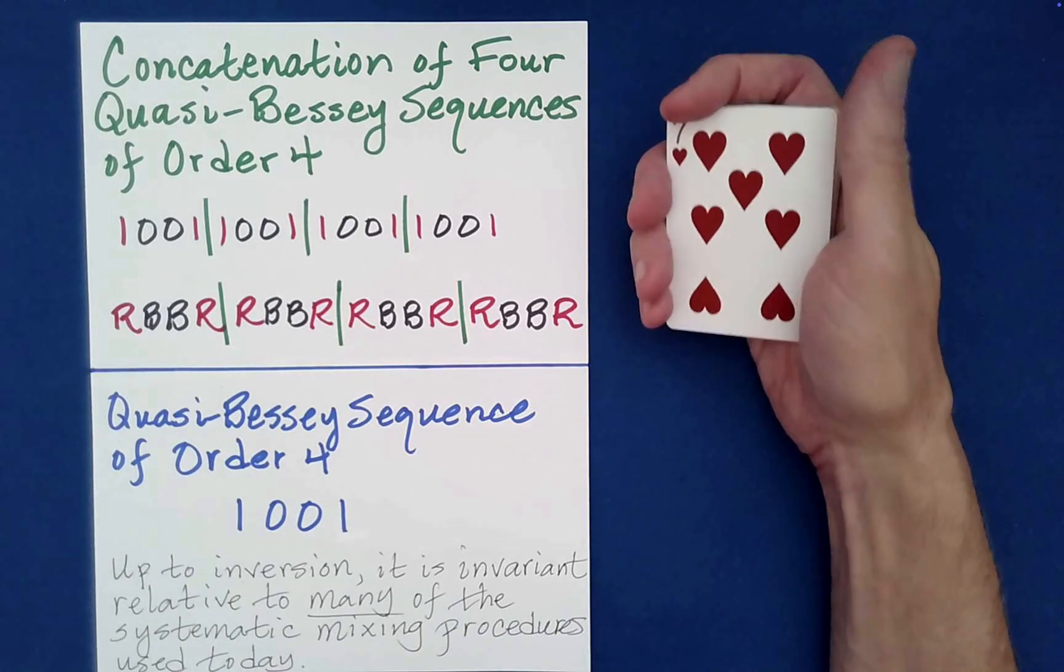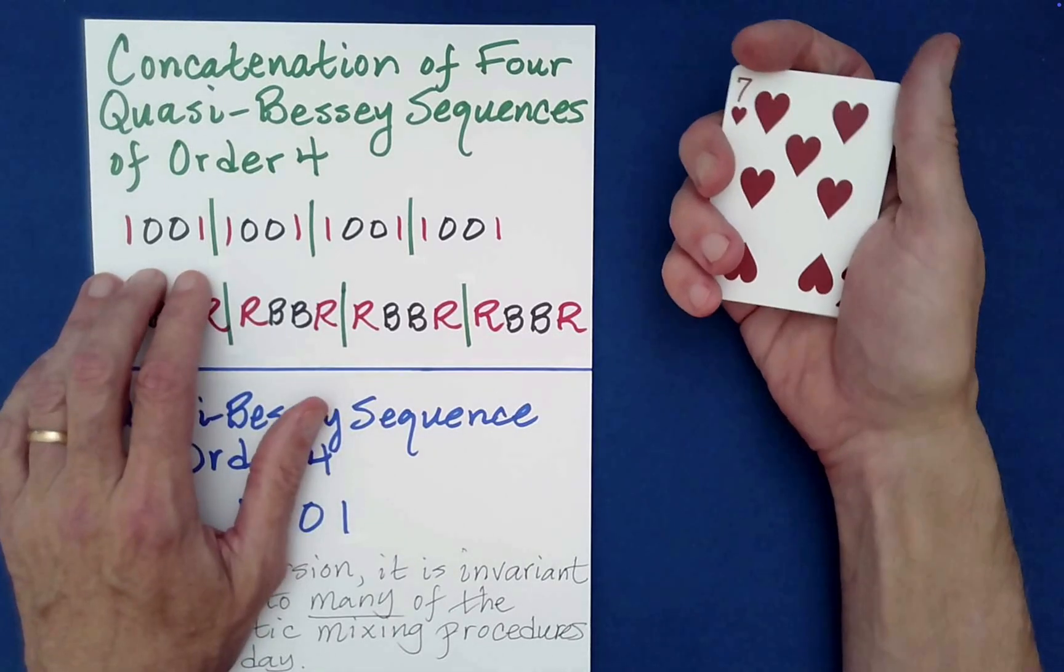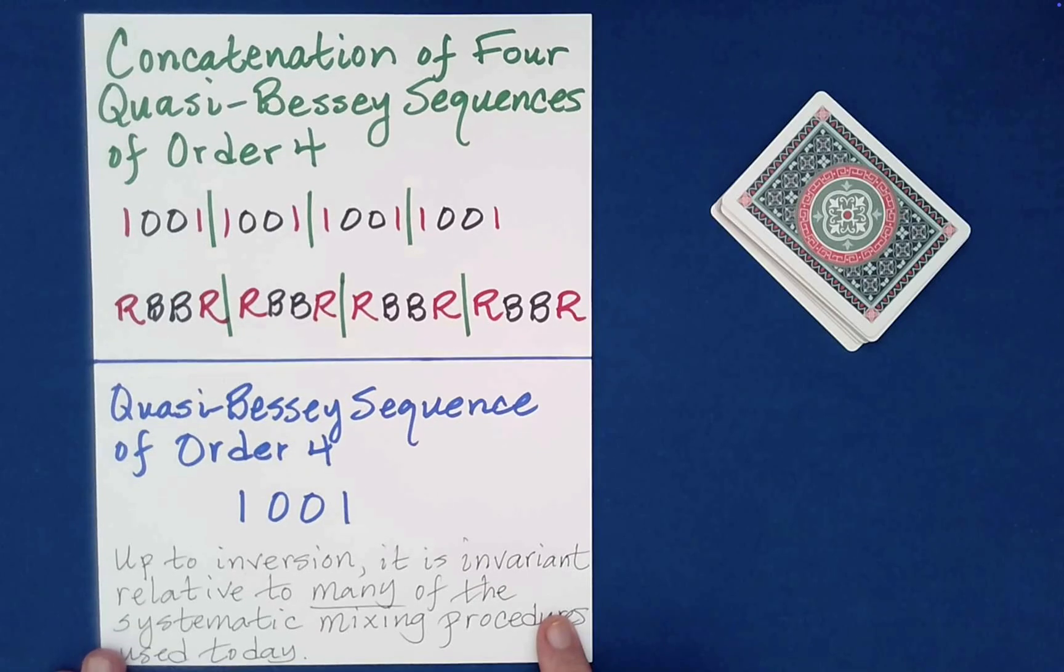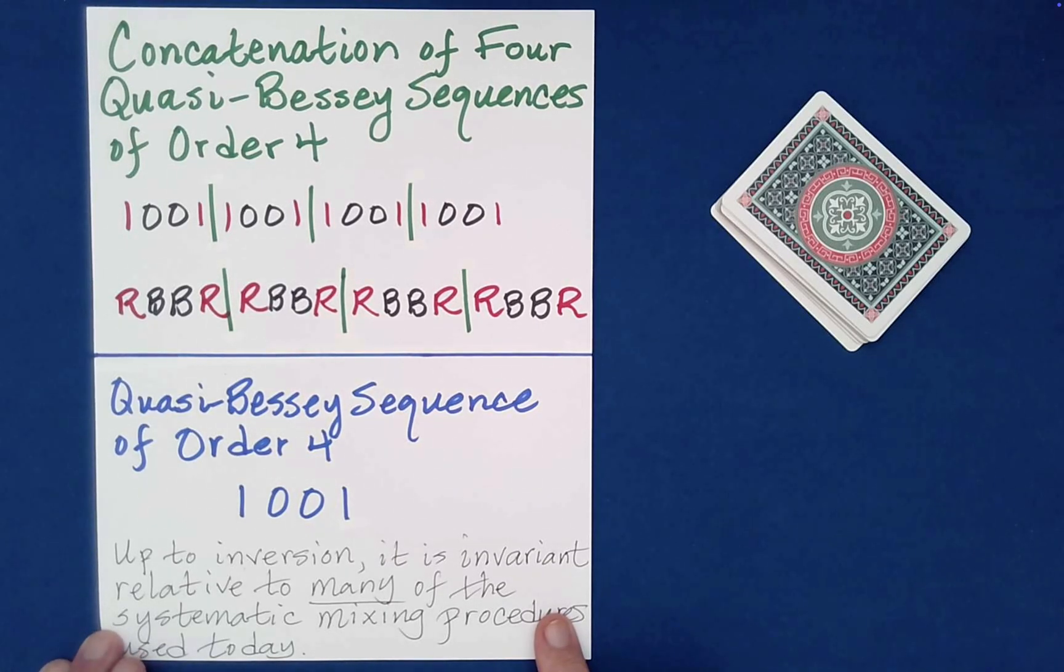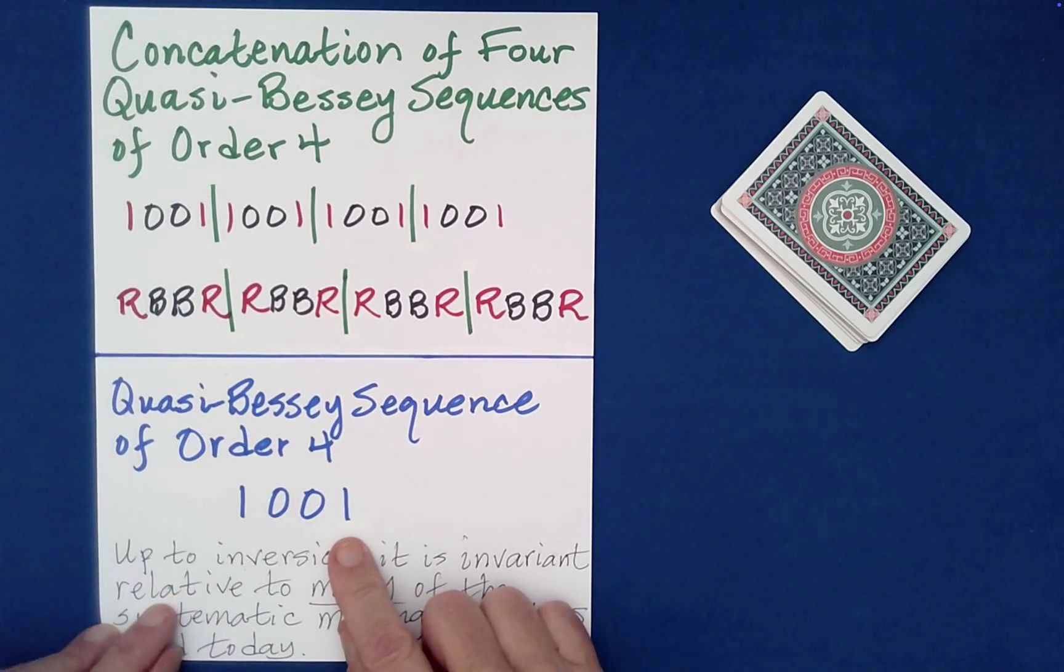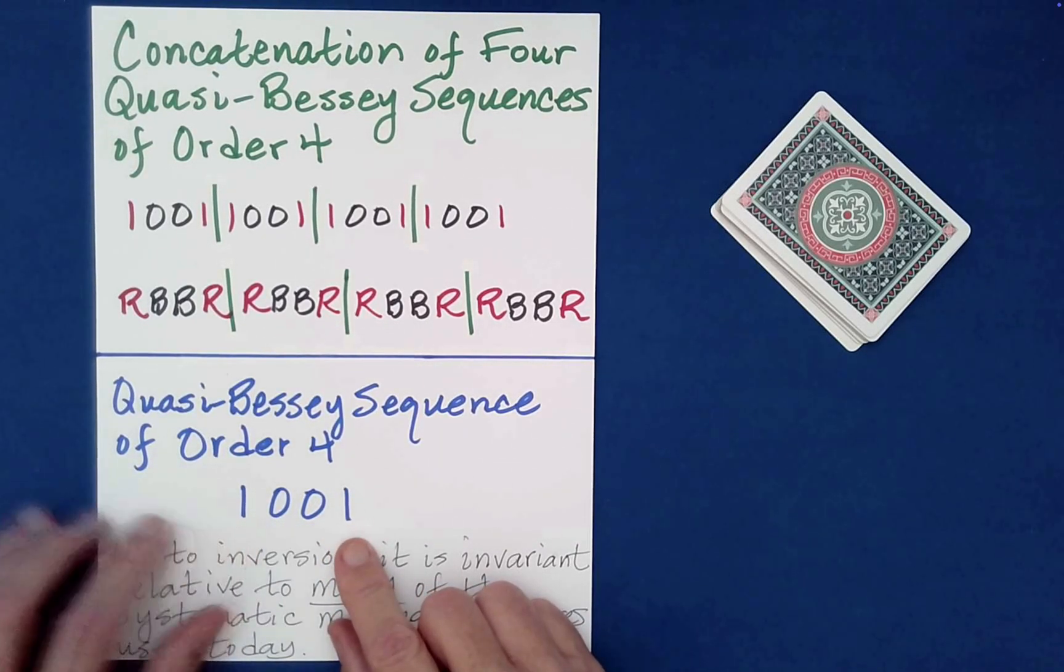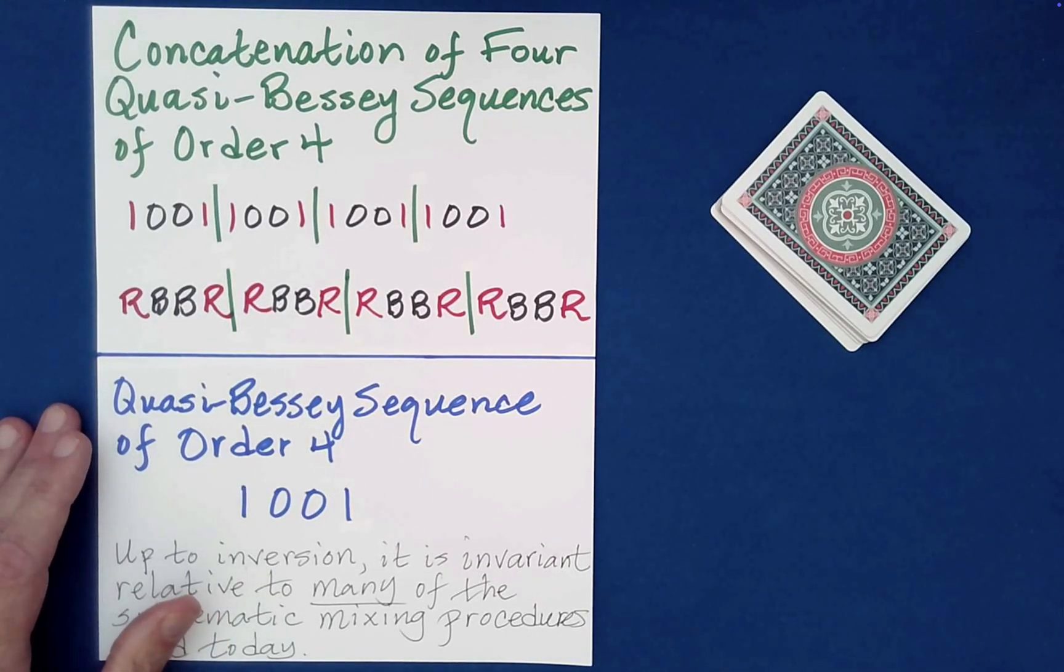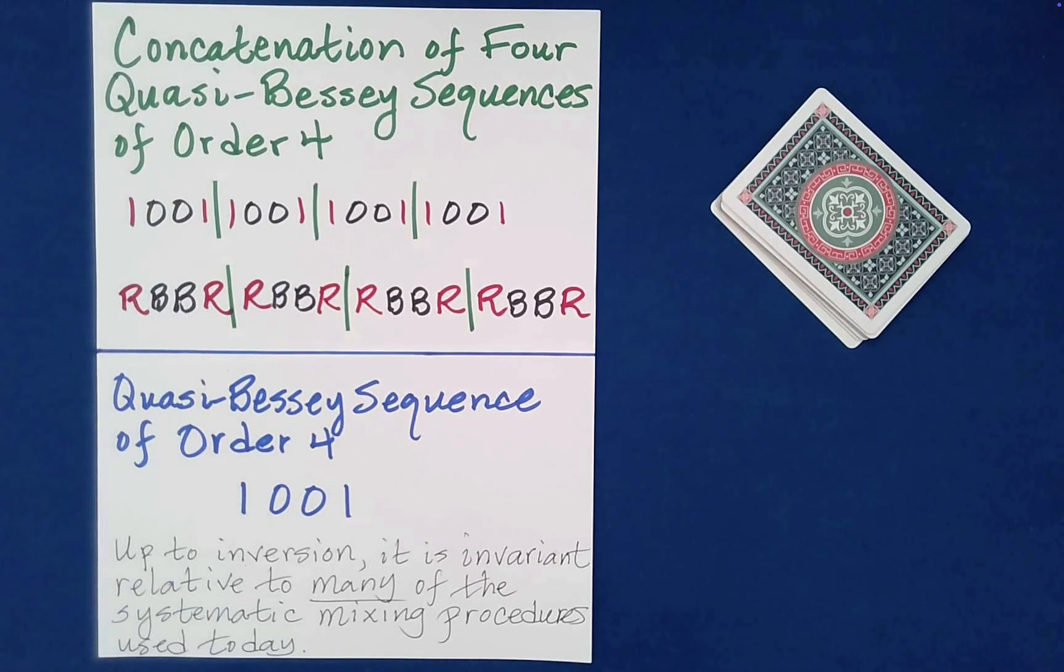With this structure, as you'll learn if you watch the videos in my series about Bessey sequences and quasi-Bessey sequences, this particular structure - this one, zero, zero, one - is invariant. We call it unharmed by many of the systematic mixing procedures used today. It will either be preserved precisely or it might be inverted. Inverted just means zeros and ones switch places.